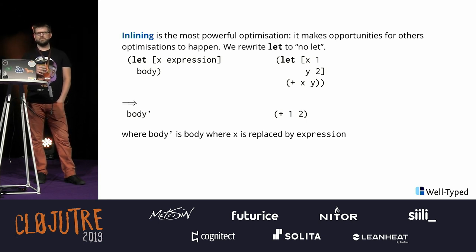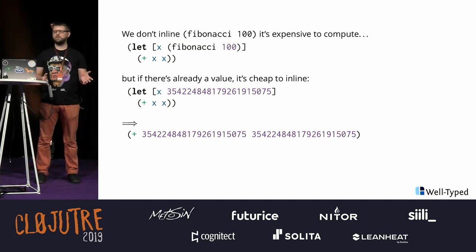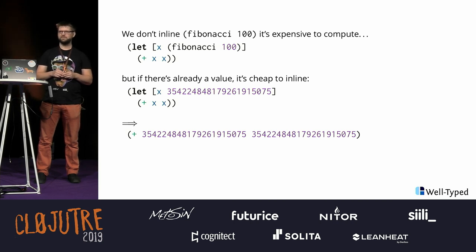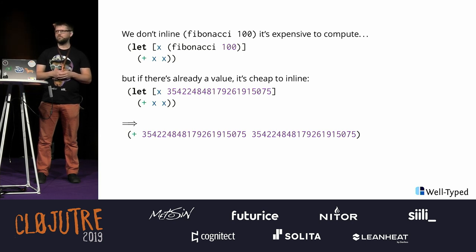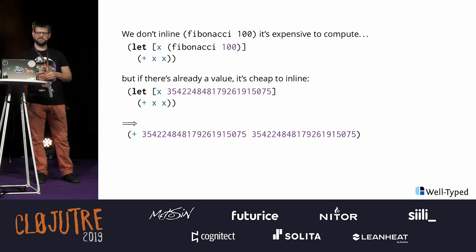And because we don't really use names in our internal representation, it's actually quite direct to implement. There's a quirk, however. If we have Fibonacci 100, it might be expensive to compute, and we use it twice — we don't want to inline it, maybe. But if there's already a value, someone was so silly to calculate it using some method, then we can inline it. So there are some heuristics, and optimizations are kind of an art. But when your language is small and simple, the optimization heuristics are small and simple too — keeping things simple makes your life easy.